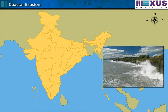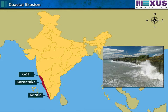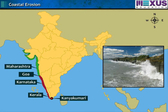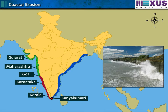The coastal erosion is severe along the west coast of Kerala, Karnataka and Goa. The Kanyakumari region of Tamil Nadu, Maharashtra and Gujarat are also affected by coastal erosion. Coastal erosion is comparatively lesser on the east coast.